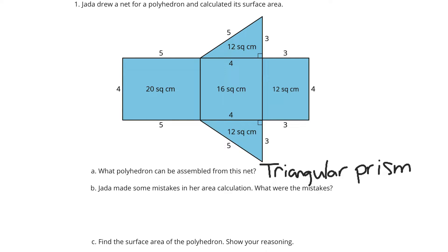Question B. Jada made some mistakes in her area calculation. What were the mistakes? Let's look piece by piece here. 4 by 5, area's length times width, so 4 times 5 is 20, and so this is fine. This square, 4 by 4, 4 times 4 is 16, so that's fine.